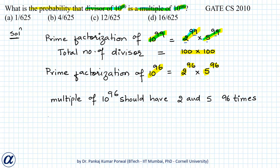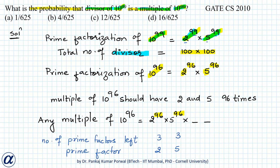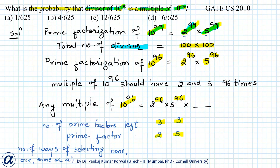So any multiple of 10 to the power 96 already uses 96 twos and 96 fives. Since divisors of 10 to the power 99 have only 2's and 5's, and we have already used 96 of each, we are left with only 3 twos and 3 fives. To get a multiple of 10 to the power 96, we can select any number of the remaining 2's and 5's, giving 4 into 4 favorable divisors.